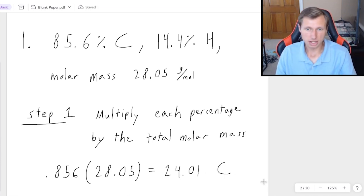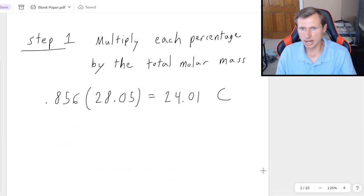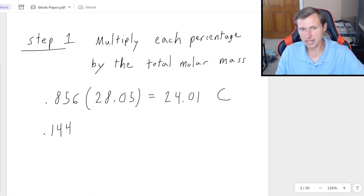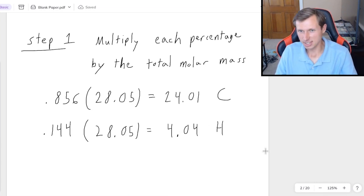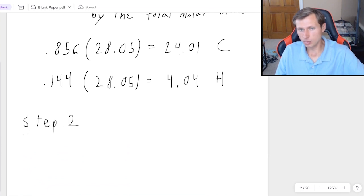And by the way, if you want to know how many sig figs you're supposed to round to, it honestly doesn't matter. There's going to be a lot of rounding in this problem, and sig figs do not matter for empirical or molecular formulas in general. So that's my number for carbon. For hydrogen, it's 14.4%, which is really .144 as a decimal, times again the total, 28.05, and that'll get me 4.04 for hydrogen. So that's it for step one.